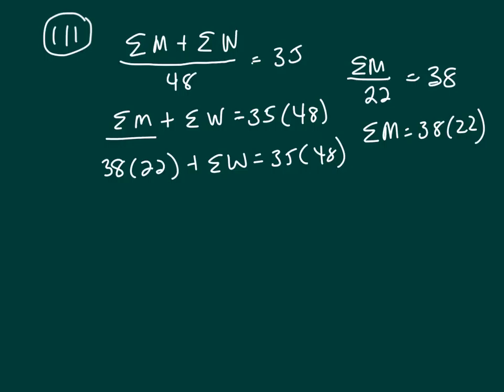So I don't see any tricks here. So the sum of the women will be 35 times 48. And I actually did that on the side of my paper. It gave me 844 minus 38 times 22. And that was 836. So the sum of the women is the difference of these two numbers.